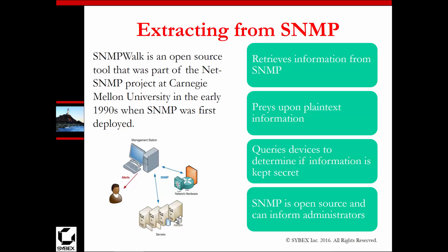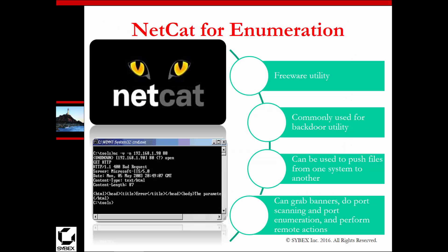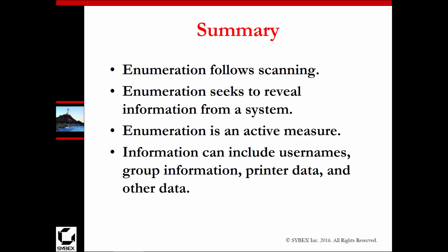For enumeration tools, PS Tools is a suite for enumeration now owned by Microsoft, useful for both remote and local computers. Netcat is freeware commonly used as a backdoor utility — you can use it to push files and for banner grabbing. Enumeration can also involve Metasploit, a huge tool we'll cover in more depth in a dedicated section. That's it for chapter 6.